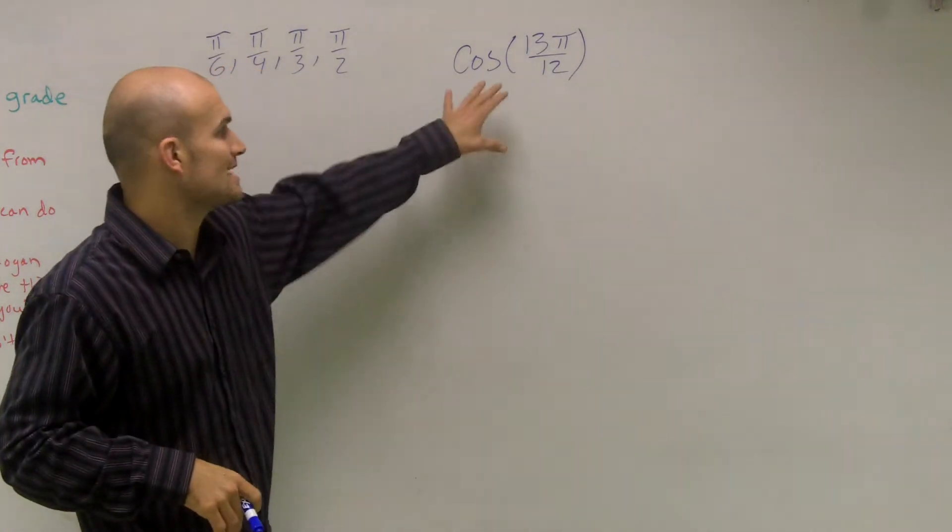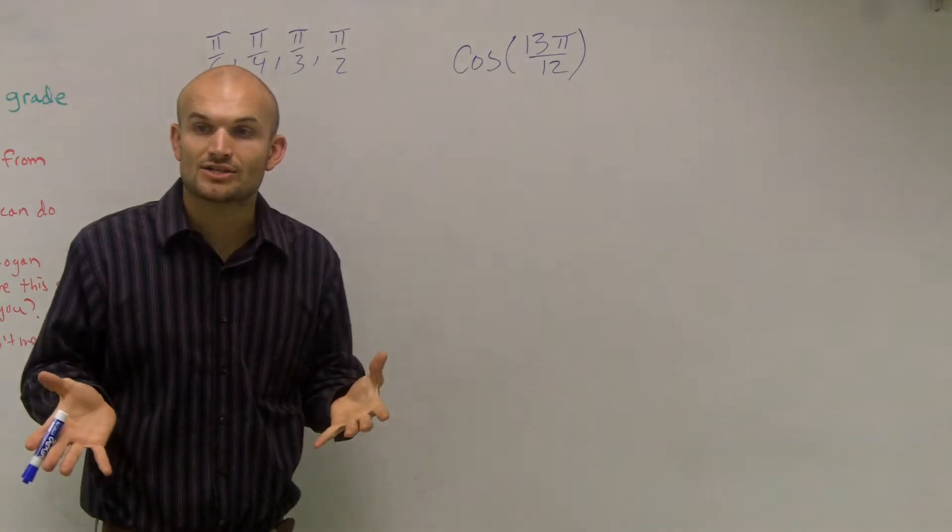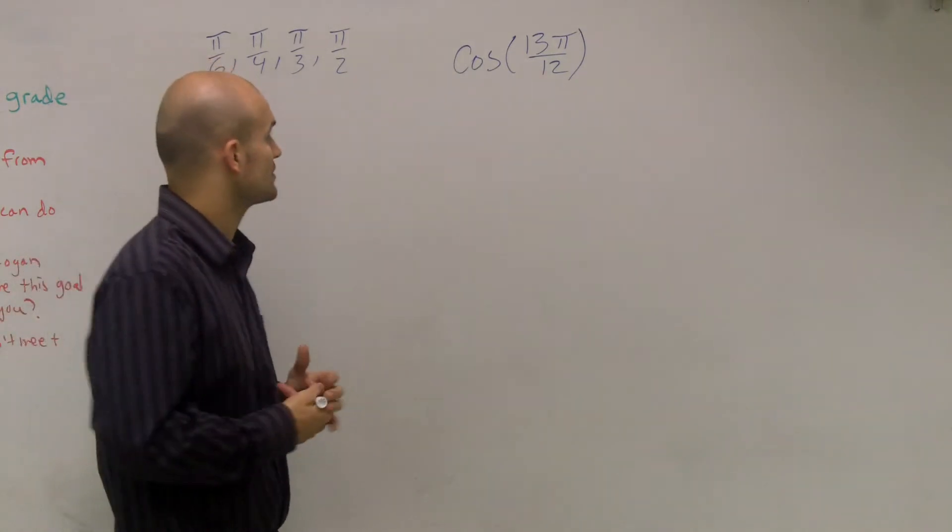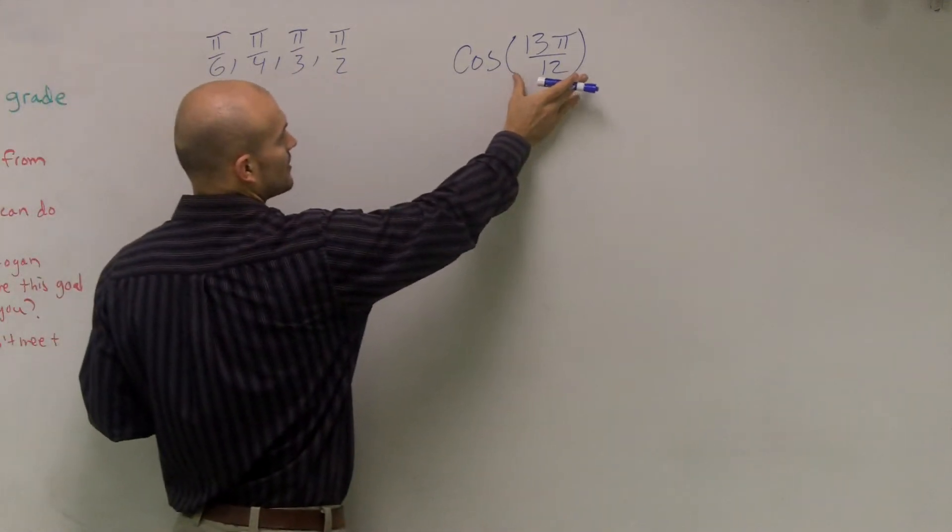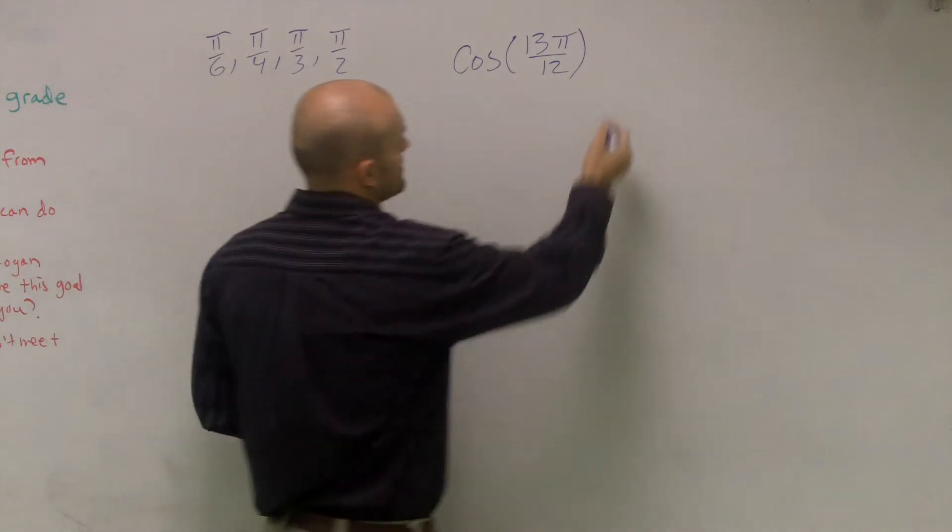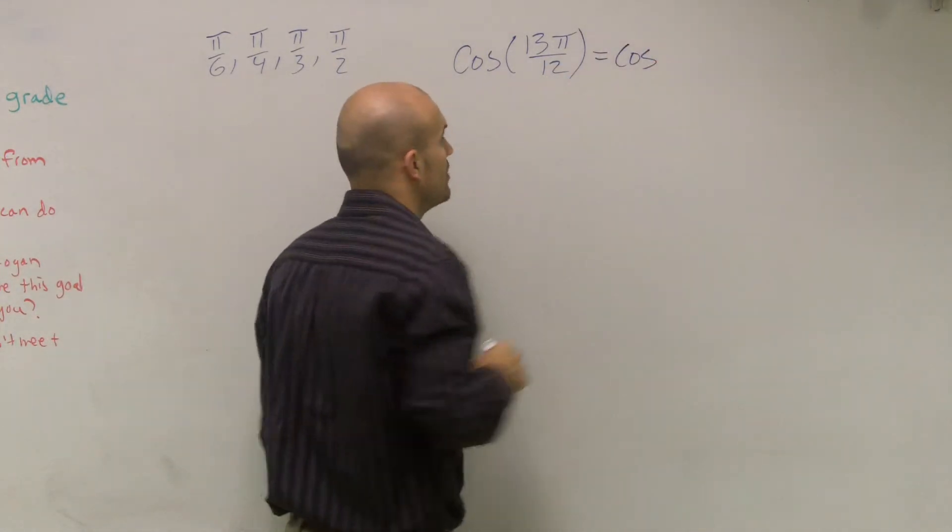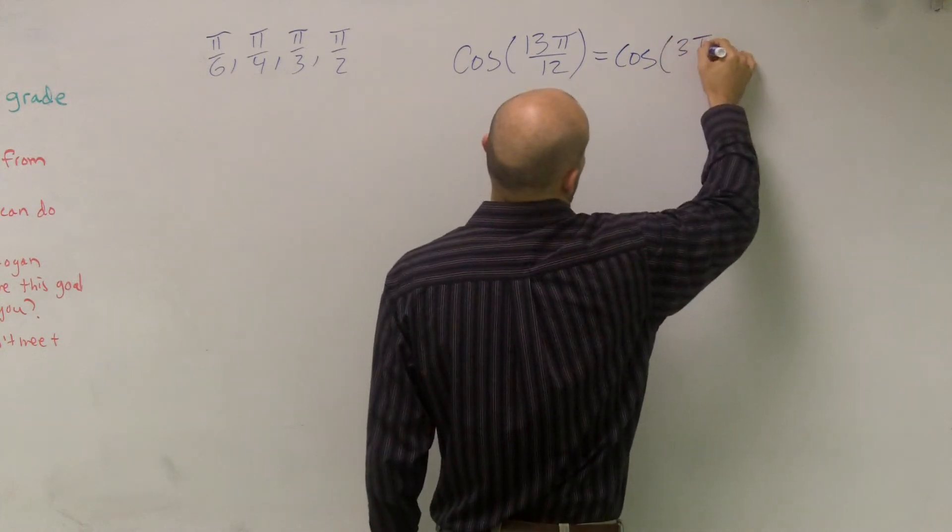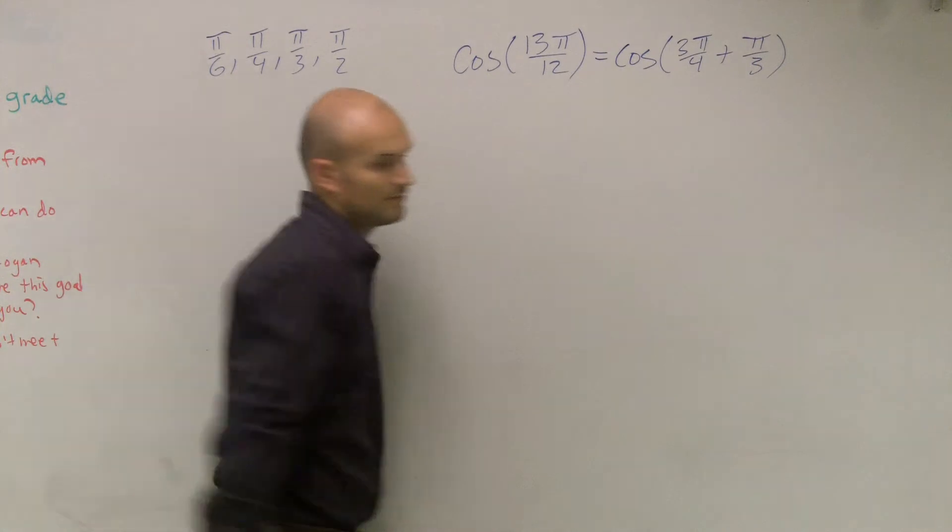But what I can do is break up 13π over 12 into the addition or subtraction of two points that are on the unit circle. So I look at my angles that I could use to make up the angle I'm trying to find the value for. When I do that, I determined that I could rewrite cosine of 13π over 12 as cosine of 3π/4 plus π/3.